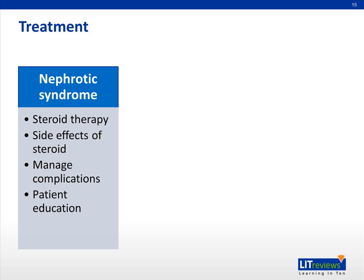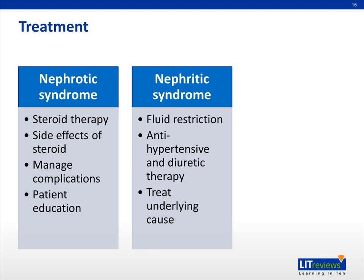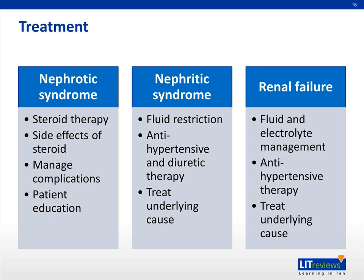For renal causes of generalized edema: firstly, for nephrotic syndrome, steroid therapy such as prednisolone forms the mainstay of treatment. One should also be familiar with the complications of the disease, such as spontaneous bacterial peritonitis, and of the treatment, such as hypertension and hyperglycemia. Patients with nephrotic syndrome will need strict fluid management, with restriction of total fluid intake and diuretic therapy. If blood pressure is not well controlled, they will need antihypertensive therapy such as calcium channel blockers. Treatment for patients with renal failure follows similar principles, requiring supportive therapy while investigating and treating the underlying cause, and sometimes requiring dialysis therapy.